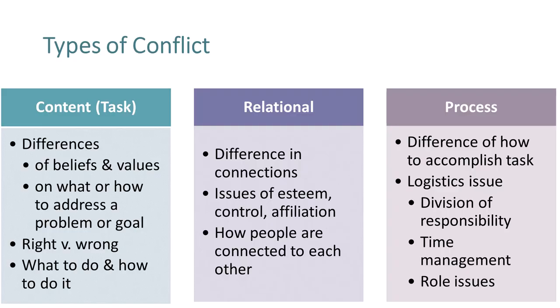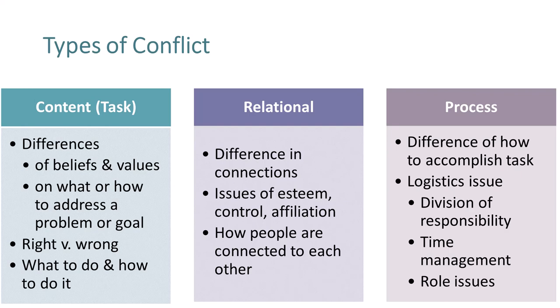Now let's look at conflict types. Note that you recognize the content and relational dimensions from our book, but process conflict is not there — we will briefly touch on the first two dimensions, but be sure to look at the deeper explanations in our textbook. Content conflict is sometimes called task conflict. This dimension involves perceived differences of beliefs and values, or perceived differences of opinion or ideas on what goals or problems to address and how to address them. Content conflict can sometimes be a good thing because it helps people achieve a better understanding of task issues and therefore improve decision making.